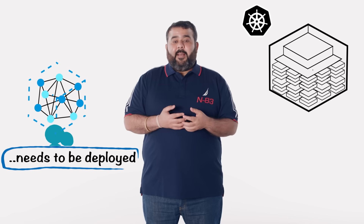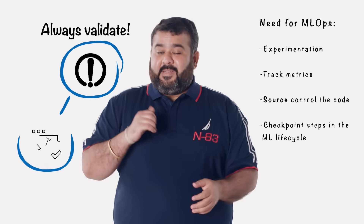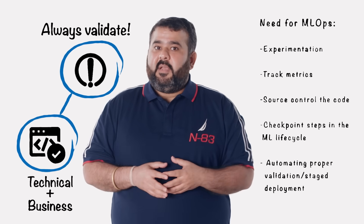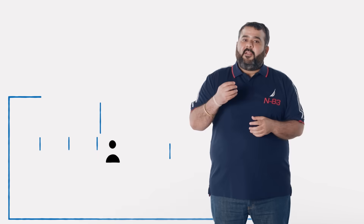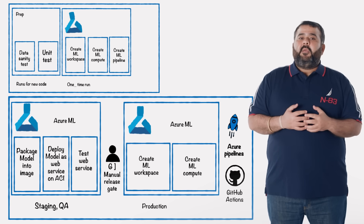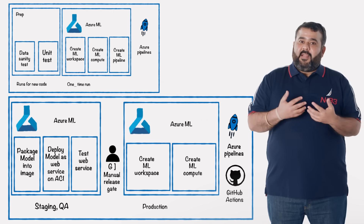Once the data scientist has been able to create a model with acceptable efficacy, this model needs to be deployed so that users and applications can start leveraging it. But before deploying the newly created model, it is important to validate it both technically and from a business standpoint. This validation may even need a staged deployment process. MLOps can help accomplish this in an automated and predictable way by creating release pipelines that evaluate, test, and package the models into containers so that they can run anywhere. It also allows for a QA phase in a low-cost testing environment, then allowing for gated or controlled rollout into production for alpha, beta, or red-blue testing.